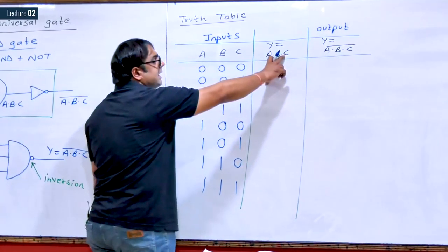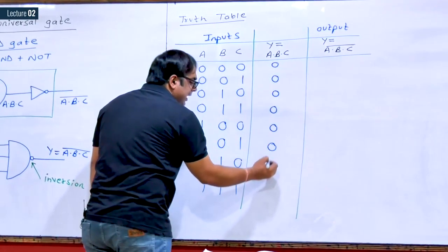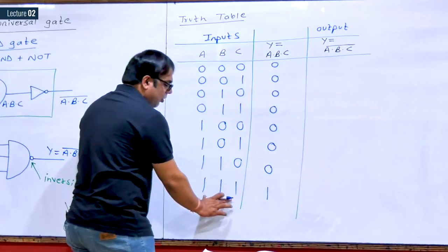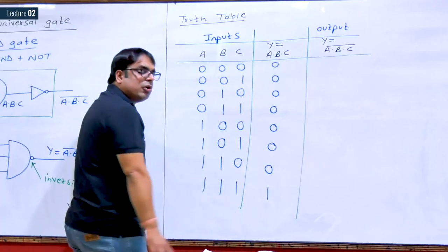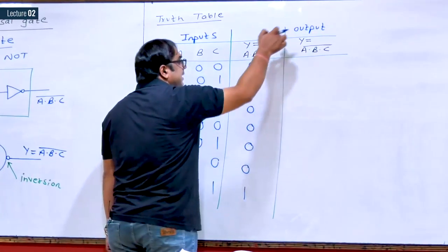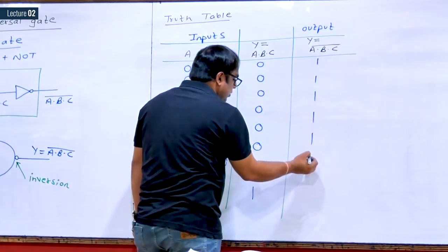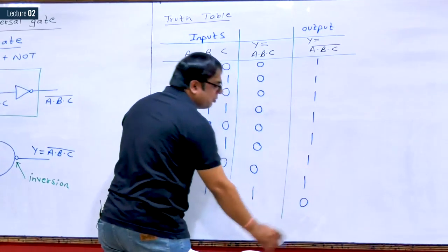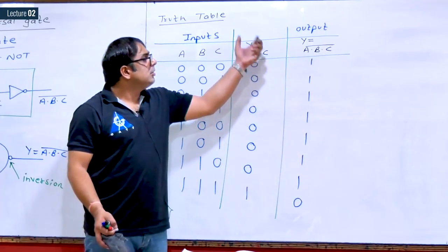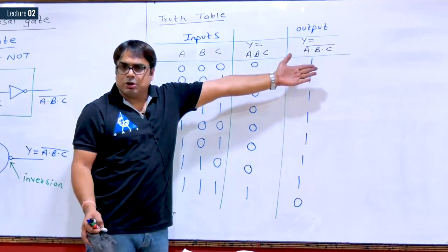This intermediate column is basically the AND gate output. Now we have to complement the logic for the final output A·B·C whole complement. Complement means all the 0s will become 1s and this 1 will become 0. So this is a complete NAND gate, which is an AND gate followed by a NOT gate.